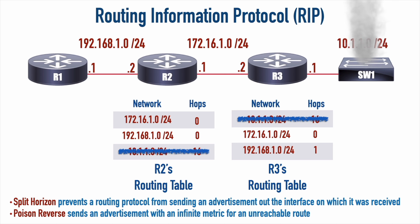Sometimes you might hear RIP called 'routing by rumor' — because that's really what's happening. One router tells its neighbor what it knows, and that neighbor tells another, passing information along the network like rumors.